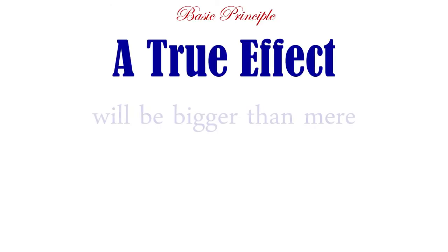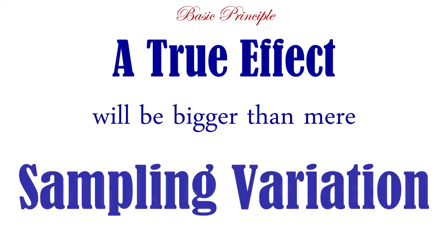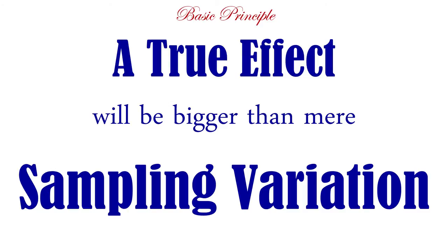A true effect — and an effect means a difference between means — a true difference between means will be bigger than mere sampling variation. We've always got samples, we never have the whole population, so we're almost always going to see some difference between the sample means. You have to compare it to the amount of variability you would expect between the means if the null hypothesis were true, just due to random sampling from the population. Your difference better be bigger than the amount of variability you would normally expect on average just from random sampling.